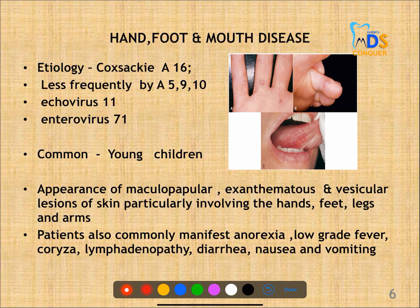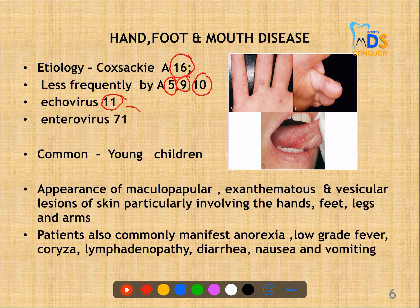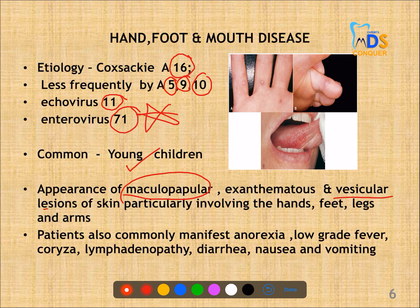The second infection is hand, foot and mouth disease. The etiological viruses may be Coxsackie A virus type 16, less frequently A5, 9 and 10, echovirus 11 and enterovirus 71. This viral infection is also most common in young children. A maculopapular rash develops, followed by formation of vesicular lesions on the skin, mostly involving the hands, feet, legs and arms. The patient may also exhibit prodromal symptoms.